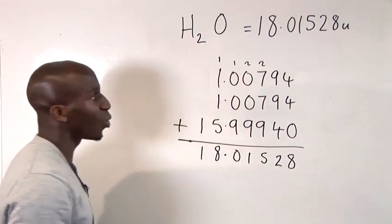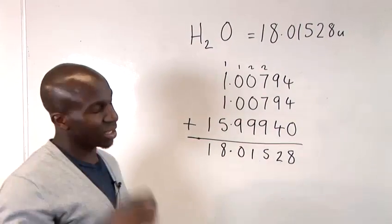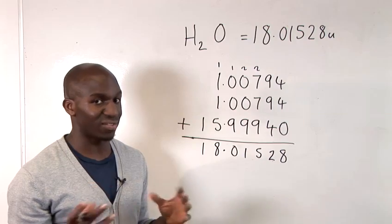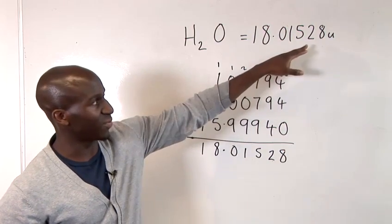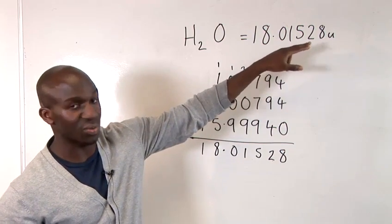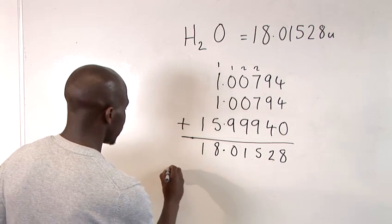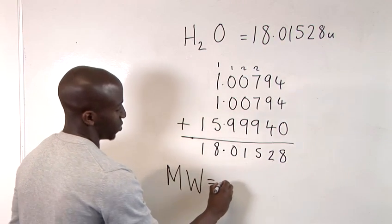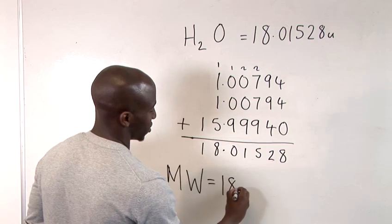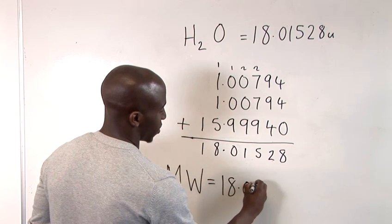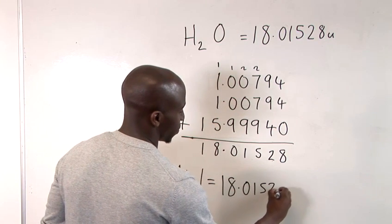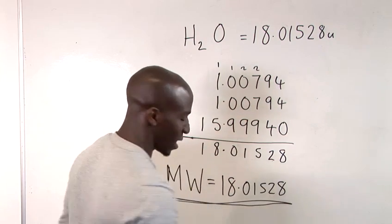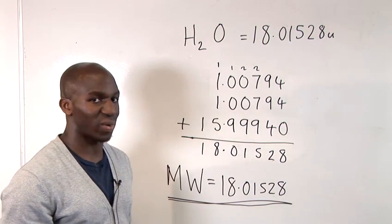So now, all we have to do to find the molecular weight, or as it's more commonly known, the relative molecular mass, is just divide or cancel off that U. So, the molecular weight of H2O is just pretty much 18.01528. And that's how to calculate molecular weight.